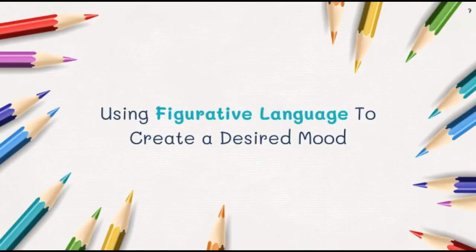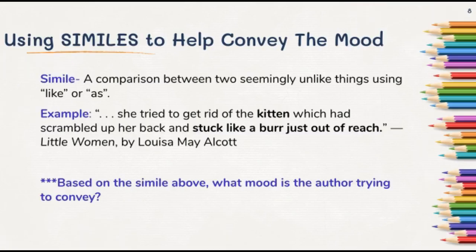Next up we're going to talk about how to use figurative language to create a desired mood. The two types we're looking at today are similes and personification. A simile is a comparison between two seemingly unlike things using 'like' or 'as.' Here's an example: 'She tried to get rid of the kitten, which had scrambled up her back and stuck like a bird just out of reach.' That's taken from Little Women.